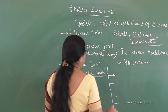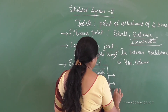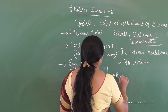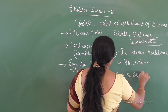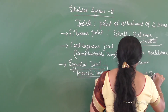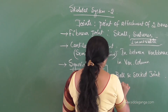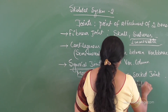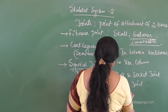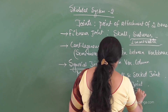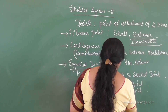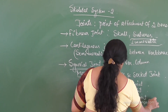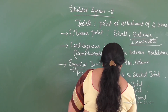These synovial joints are of five types. The first is the ball and socket joint, the second is the hinge joint, the third is the pivot joint, the fourth is the gliding joint, and the fifth is the saddle joint.